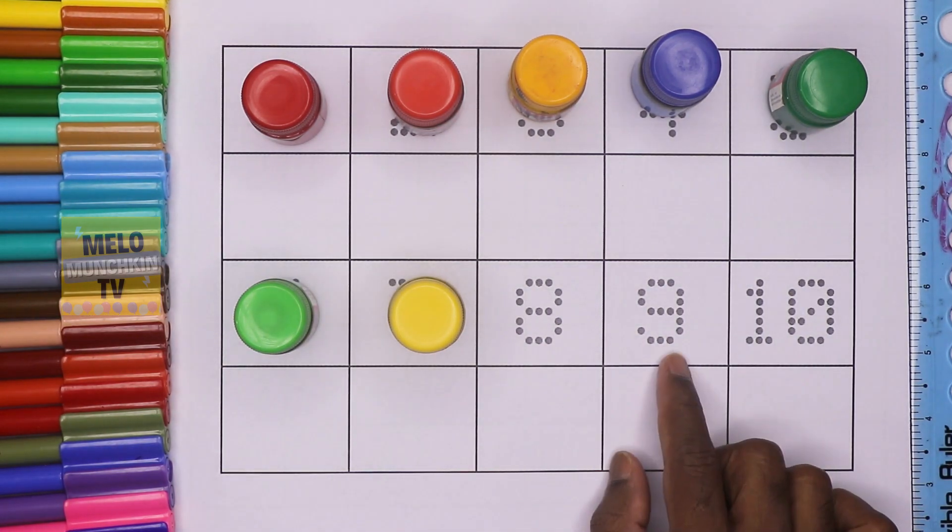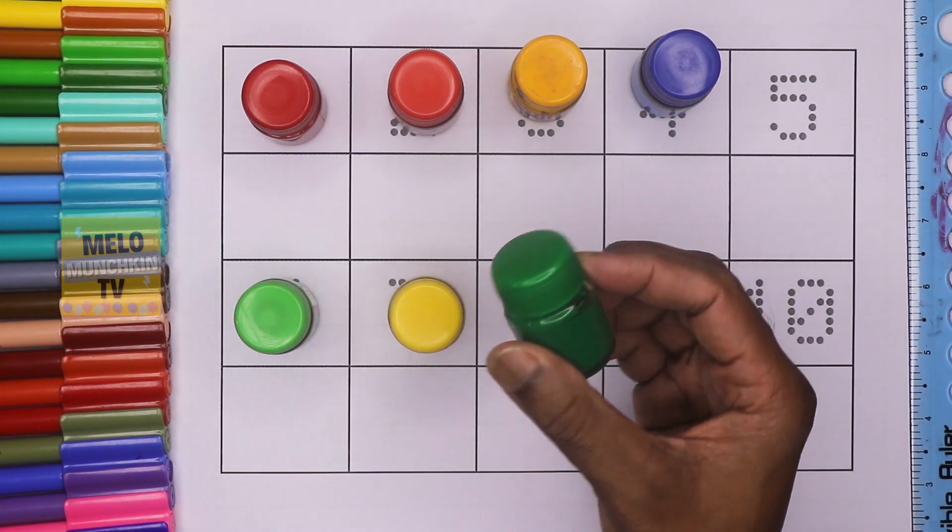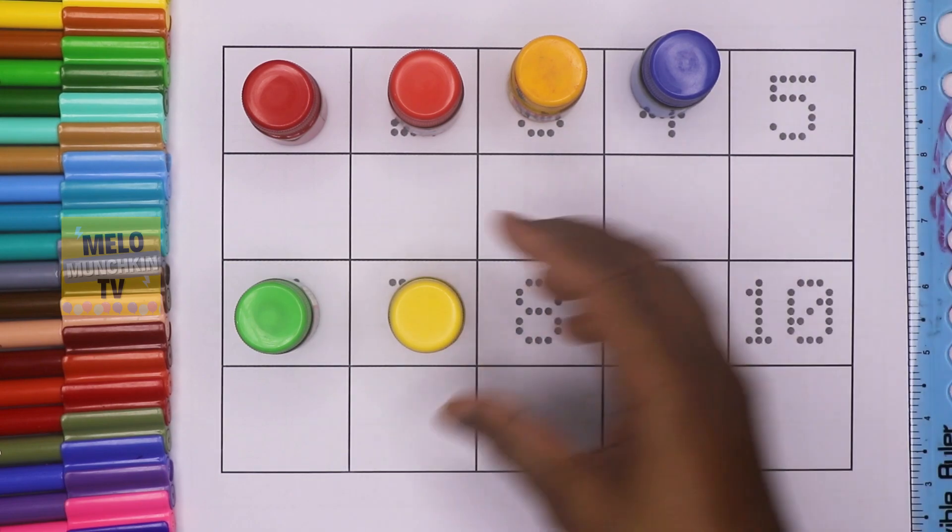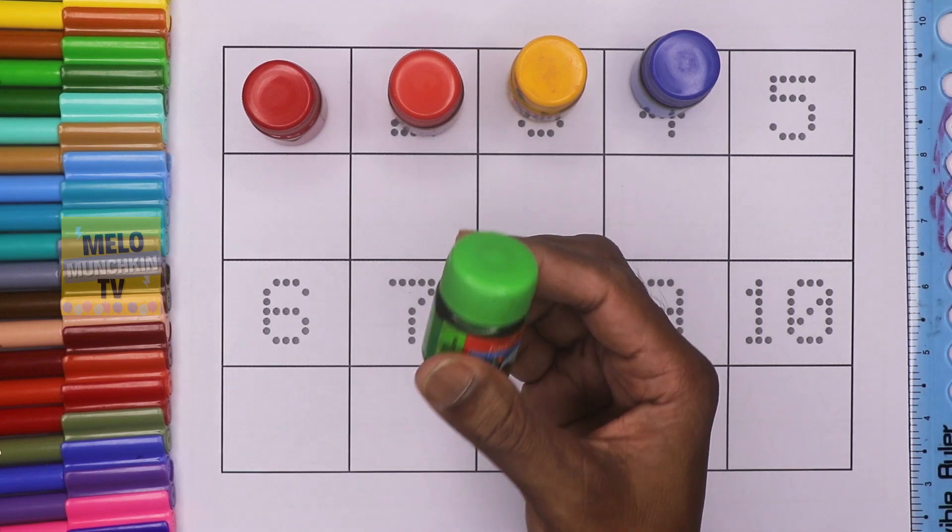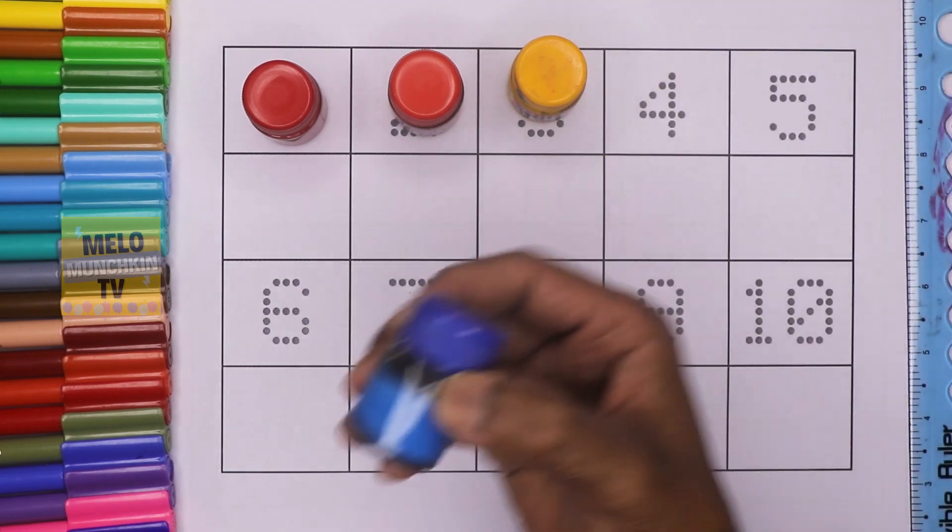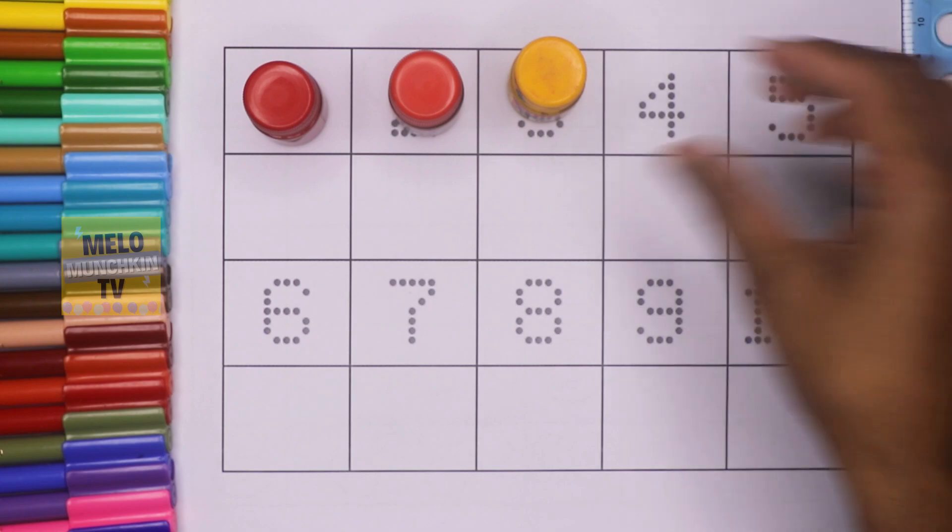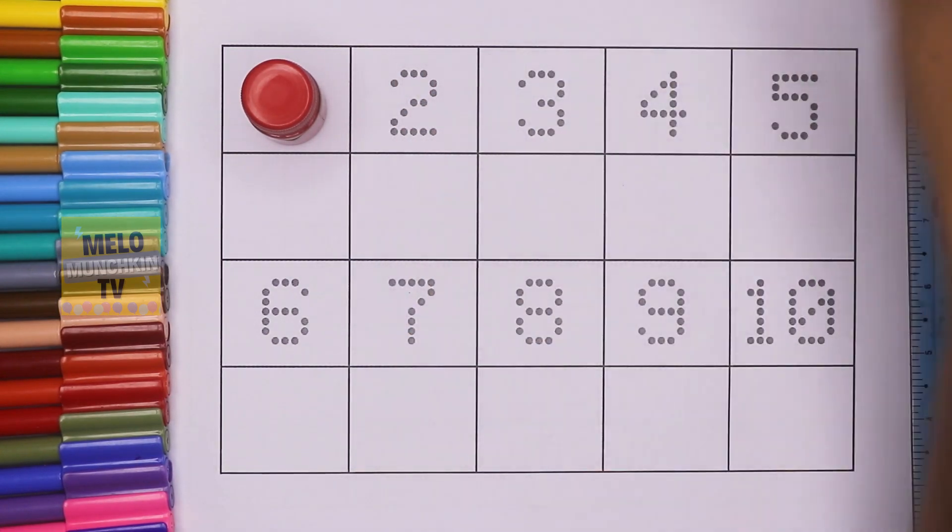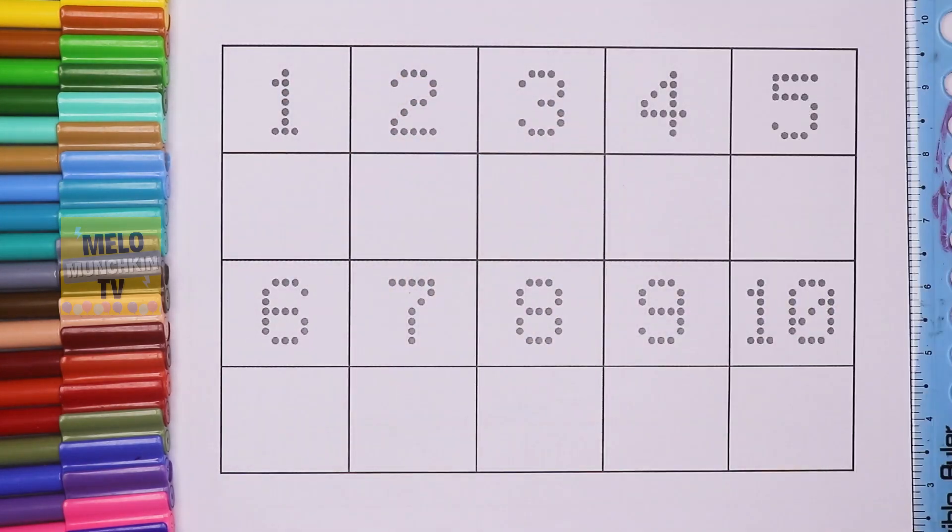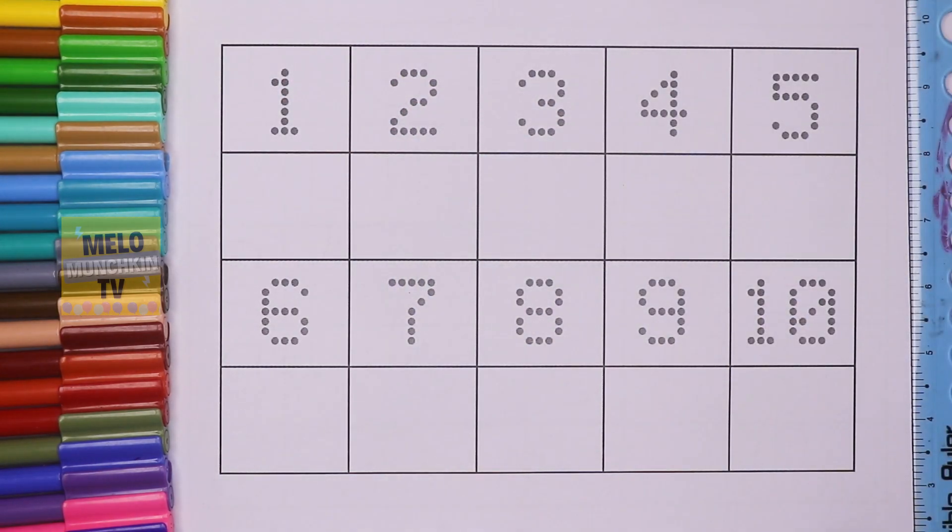Eight, nine, ten. This is dark green color, this is lime yellow, this is light green color, this is blue color, this is chrome yellow, this is orange, and this is red. So let's start numbers.